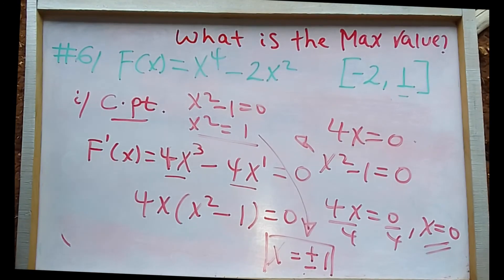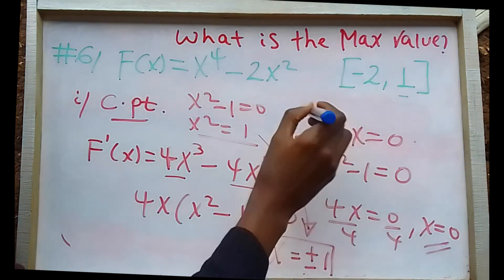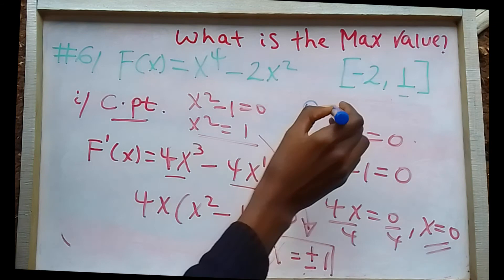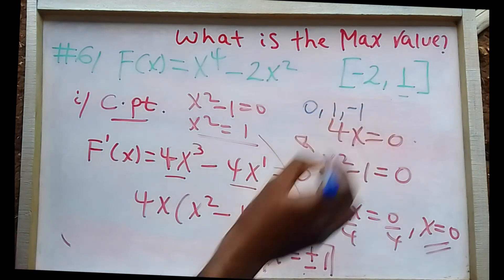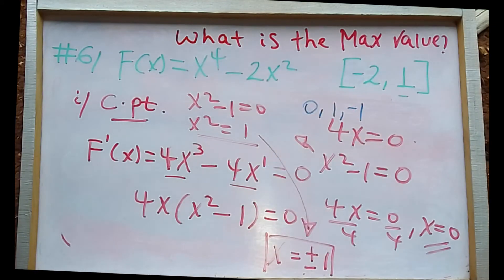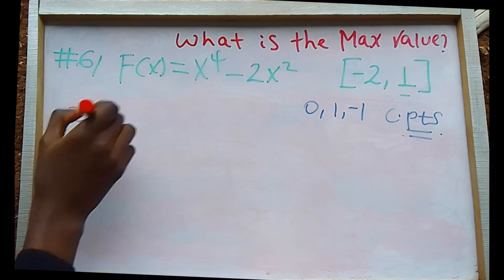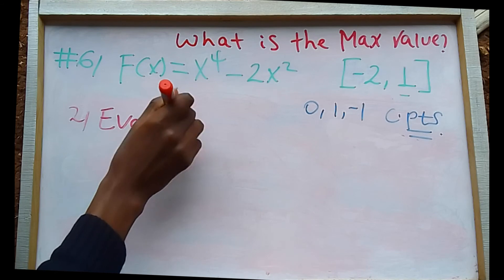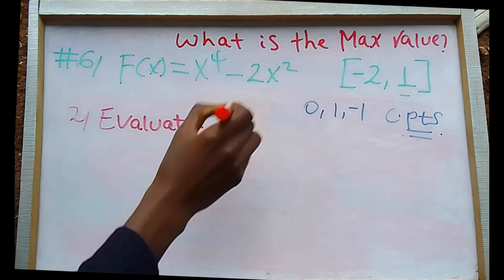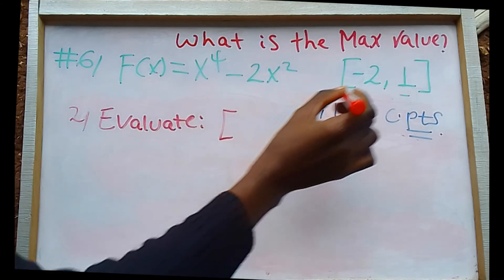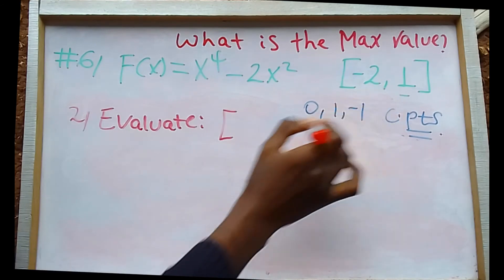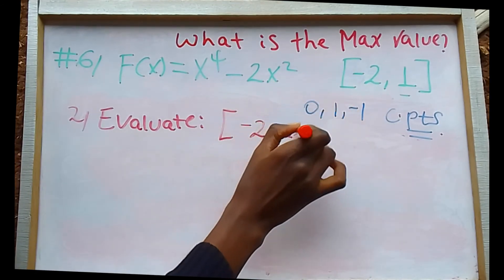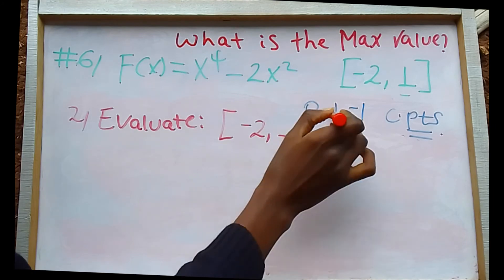X could be plus or minus 1. So the critical points are: 0, plus 1, and minus 1.